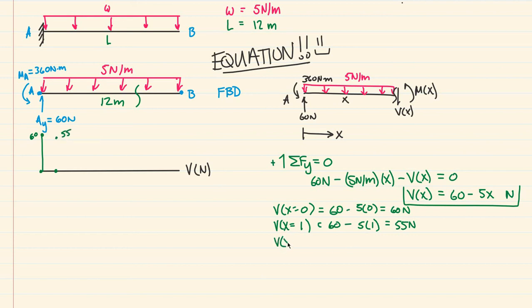What about closer to the end? Let's say x = 10. This is a 12-meter span, so probably somewhere over here. What is the shear there? It's going to be 60 - 5(10), which is 60 - 50 = 10 newtons. So somewhere over here, the shear is 10 newtons.